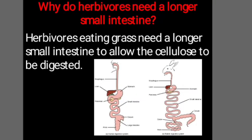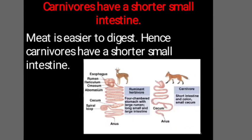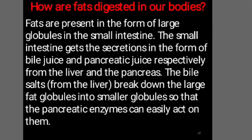How is the small intestine in herbivores? Herbivores eat grass, so they need a longer small intestine which allows cellulose to be digested. Whereas carnivores need a shorter small intestine, since meat is easier to digest. When food mixed with hydrochloric acid and pepsin has its protein part digested by pepsin, it comes to the small intestine for further digestion.